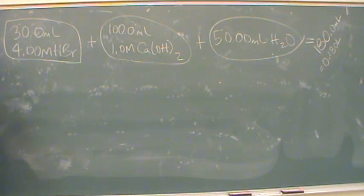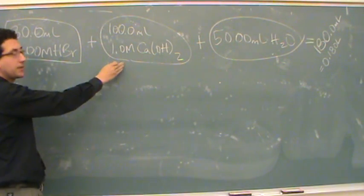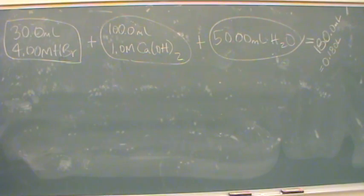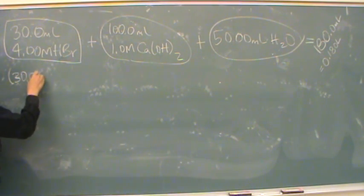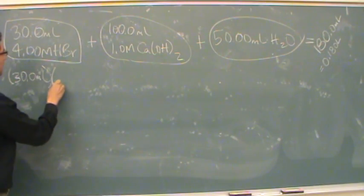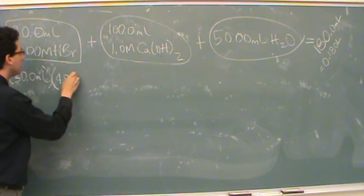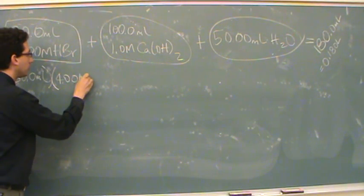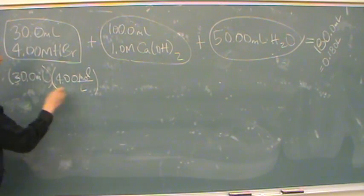So let's find the moles of bromine from here and the moles of calcium from here. Because the moles aren't changing in this reaction for any of the spectator ions. They're just spectator ions, they just sit there and watch.